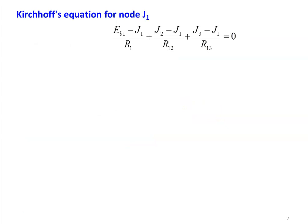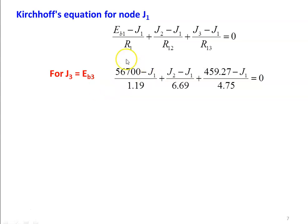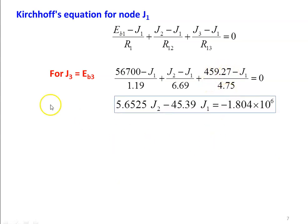Applying Kirchhoff's law for node J1: (Eb1 − J1)/R1 + (J2 − J1)/R12 + (J3 − J1)/R13 = 0, where J3 = Eb3. Substituting Eb1 = 56,700, R1 = 1.19, R12 = 6.69, J3 = 459.27, R13 = 4.75, and simplifying, we get: 5.6525·J2 − 45.39·J1 = −1.804 × 10⁶ ... (Equation 1).